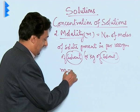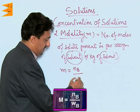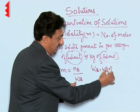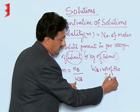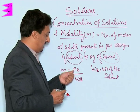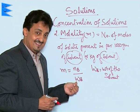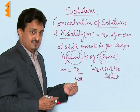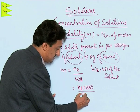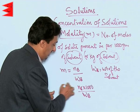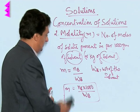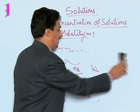The formula for molality: it is the number of moles of solute per kg of solvent. Here, w_B is the weight of the solvent. Using the same symbols as before, it is n_B divided by w_B, where the weight is in kg. If the weight of the solvent is in grams, we multiply by 1000 to convert it to kg.